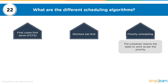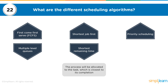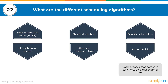Higher priority processes are dealt with first, then normal, then low priority. The fourth option is Multiple Level Queues, where processes are assigned to a queue based on specific properties like process priority or memory size. Then Shortest Remaining Time, where the process closest to completion is allocated CPU first. Finally, Round Robin, where each process gets an equal share of time in turn — if there are 10 processes, each gets a time slice, cycling through until all are executed.